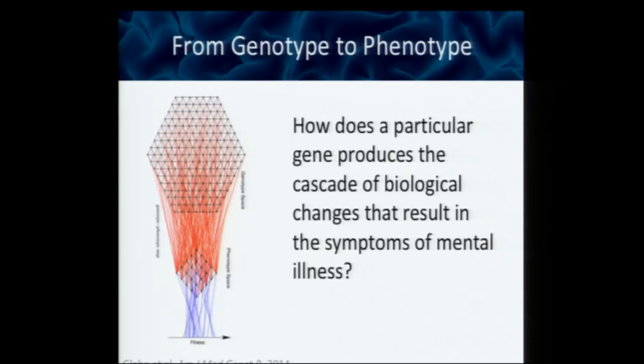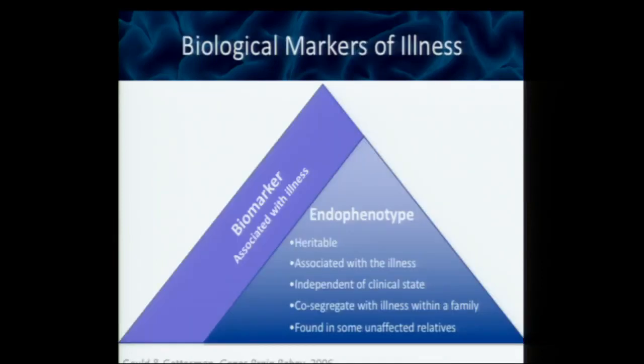Compared to the complexities of the mental illnesses that we're studying, the question is how do we get there and what do we do? In my lab, we focus on one particular idea: we're interested in biological markers of illness, but specifically that subset of biological markers that share the genetic predisposition with the illness — in other words, an endophenotype.